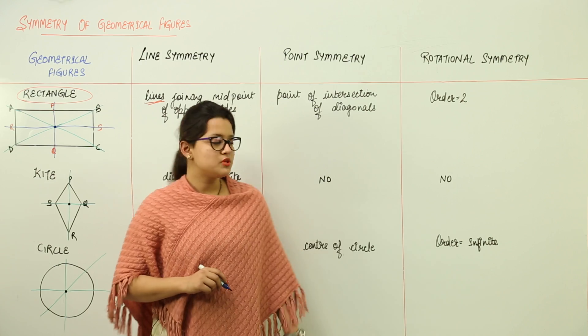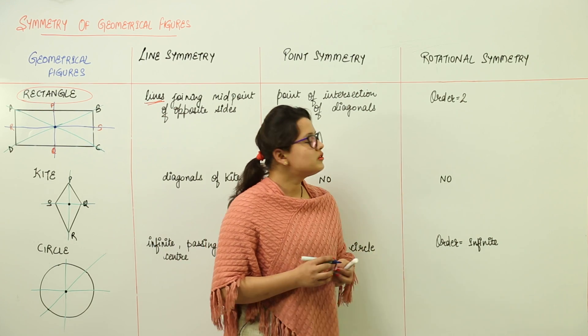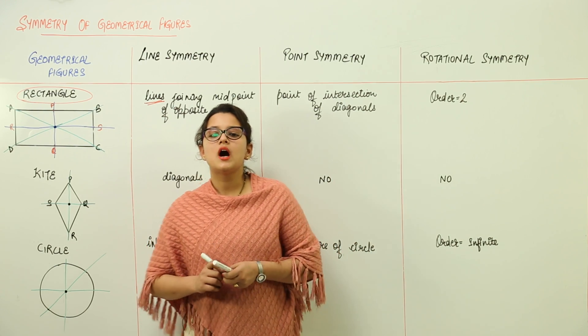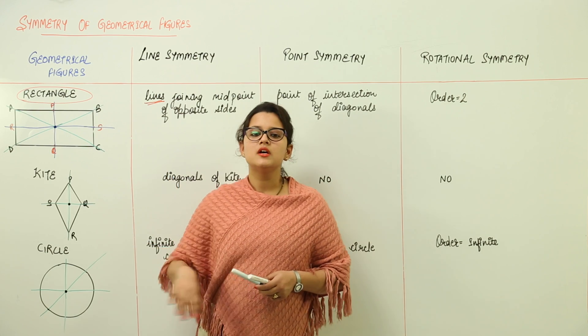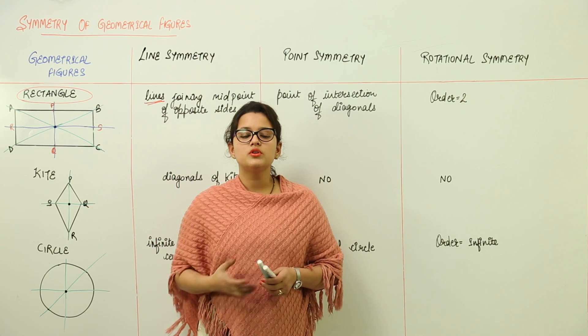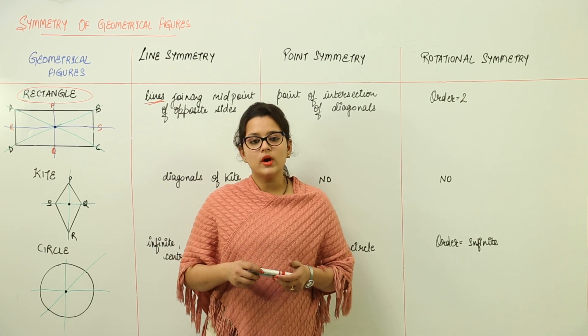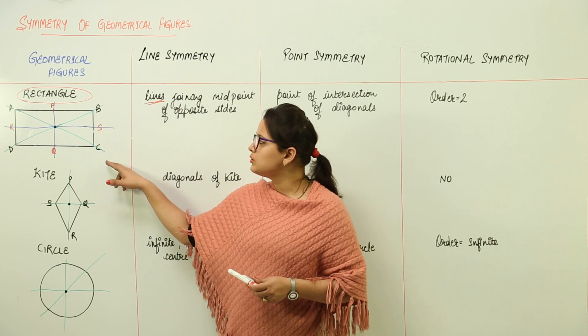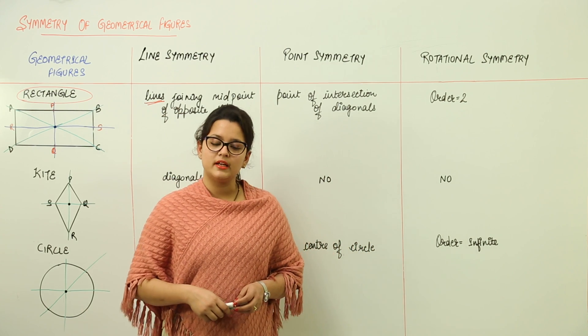So that is the point of symmetry. And the rotational symmetry, that is how many times it can be rotated such that it gets back to its original state in one complete turn, that is 2 times. So we have the order of rectangle as 2.